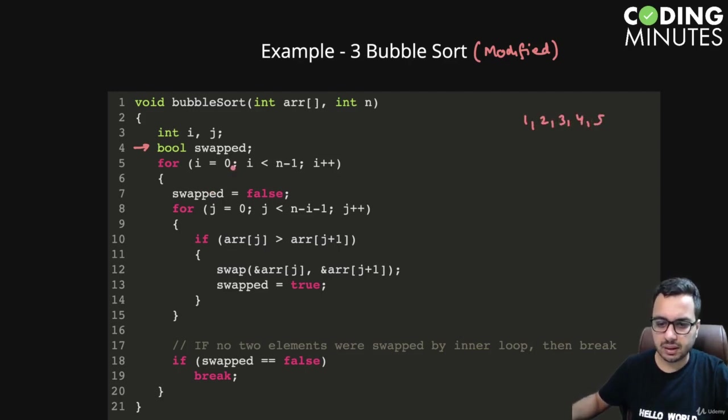We say swapped is false and go from zero till this particular element. We check whether 1 is greater than 2, 2 is greater than 3, 3 is greater than 4, 4 is greater than 5.